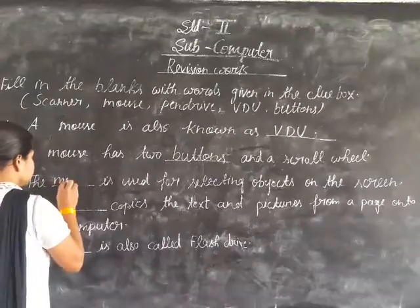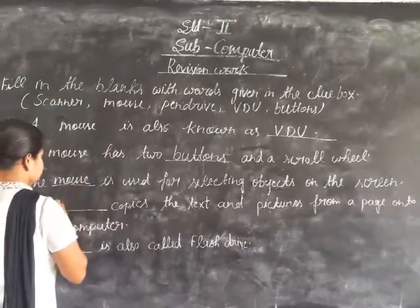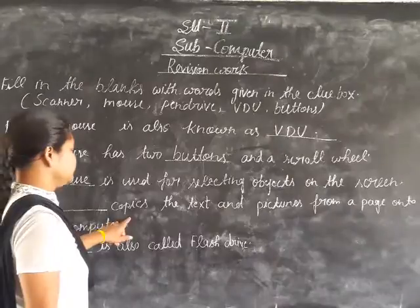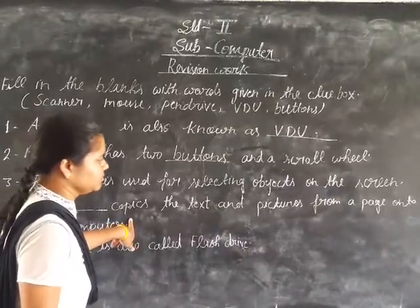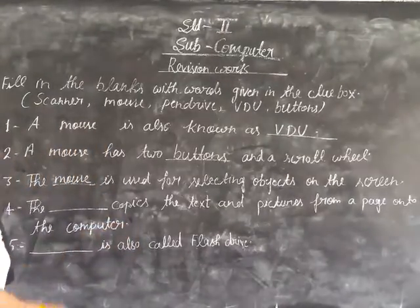Third answer: the button is used for selecting objects on the screen. Fourth, the button copies the text and pictures from a page onto the computer. The pen drive.